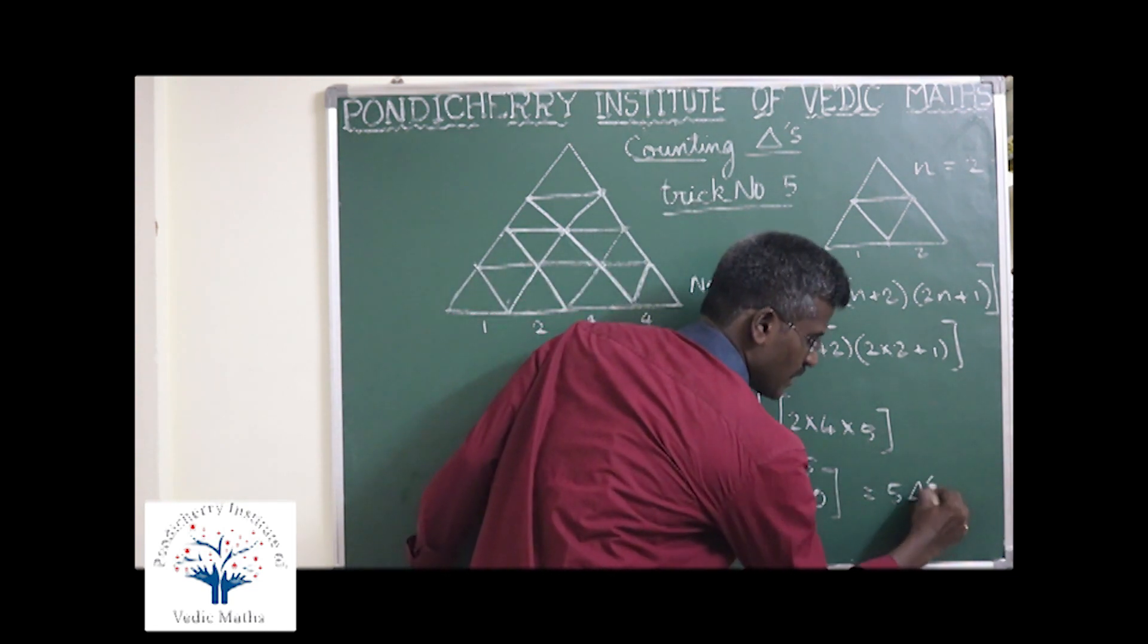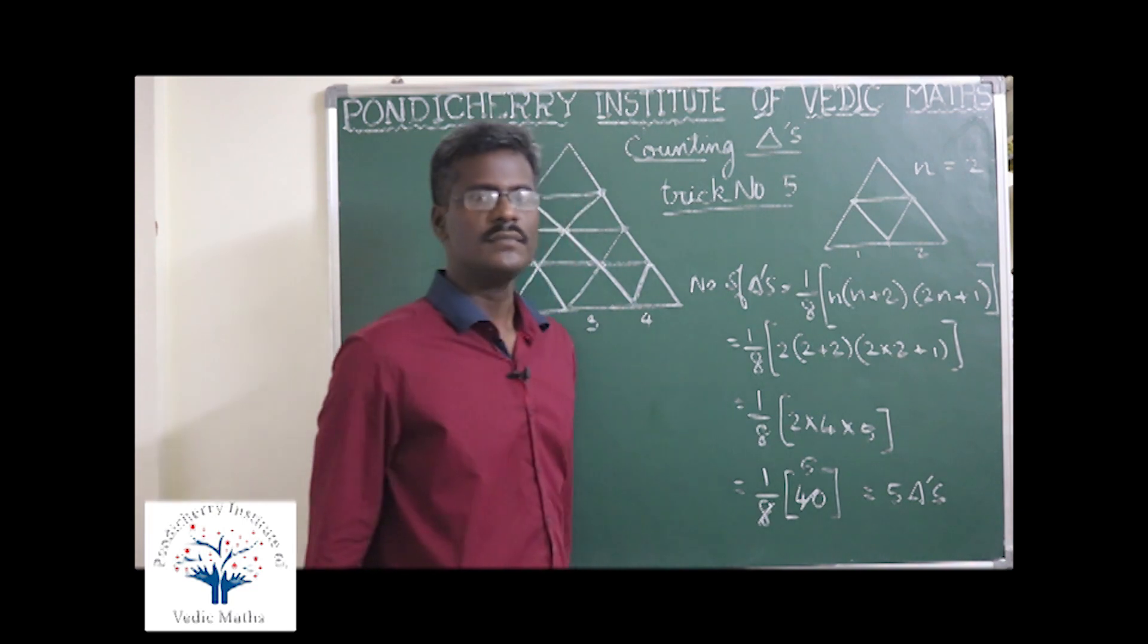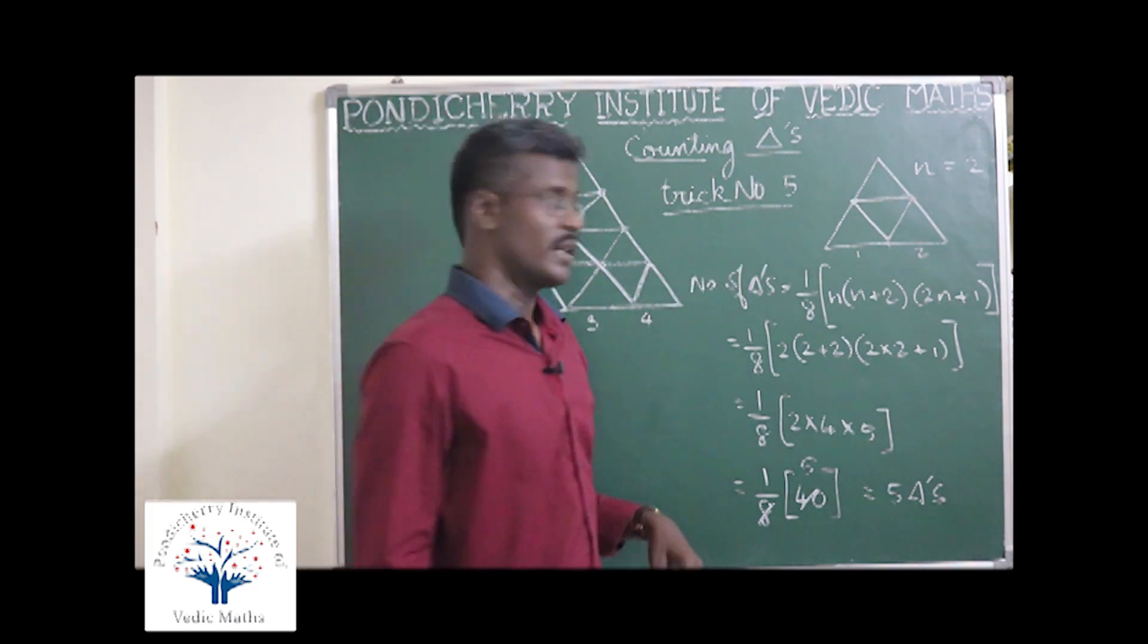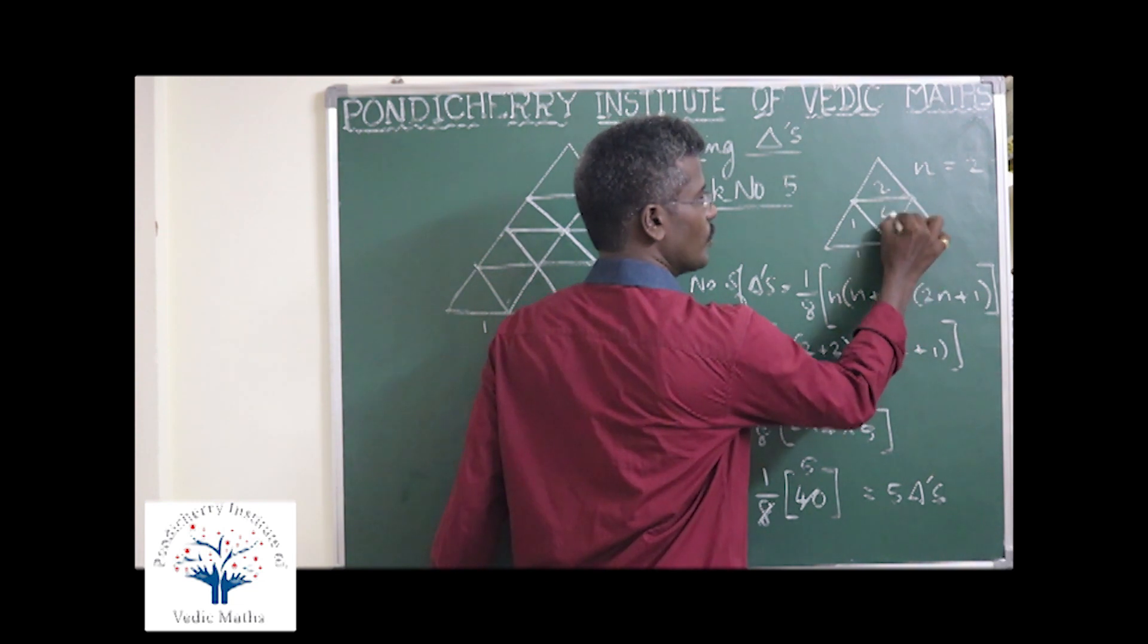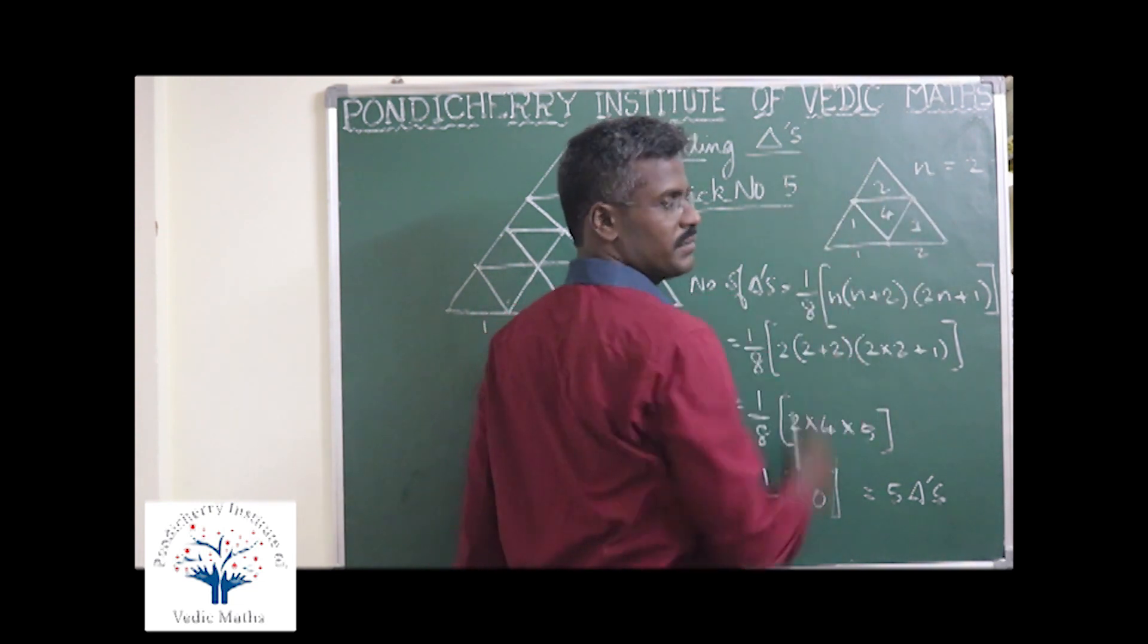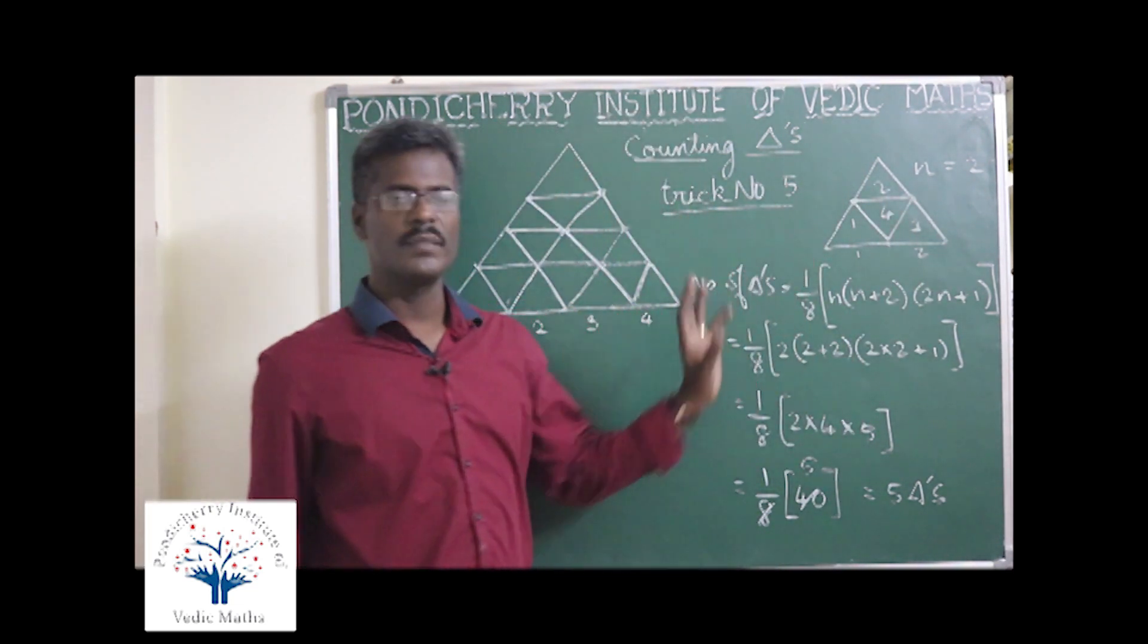So 5 triangles are there. We will cross check: 1, 2, 3, 4 and the big triangle is 5. So the problem is easier to solve.